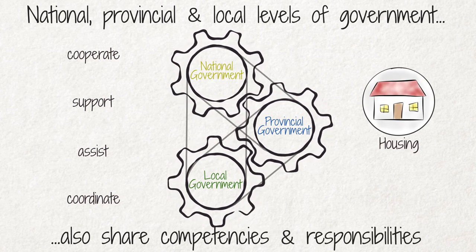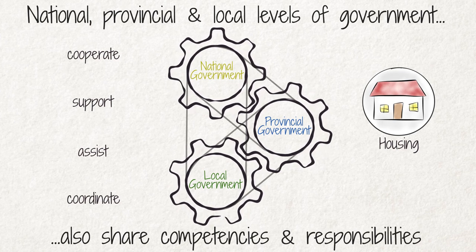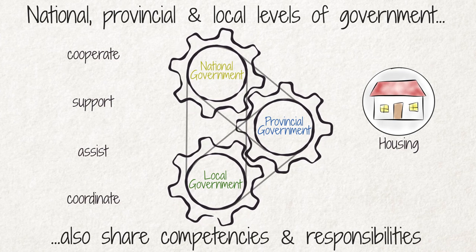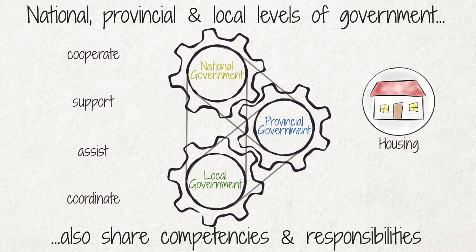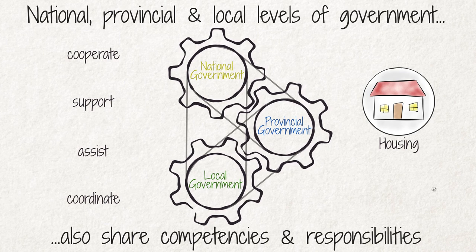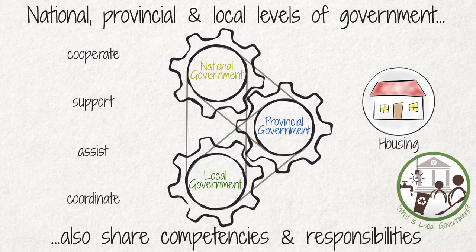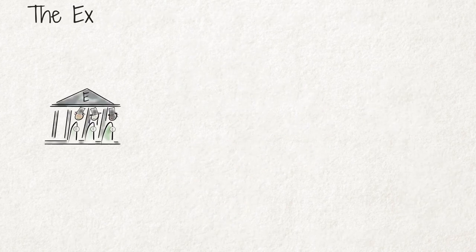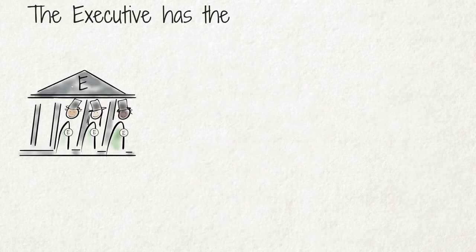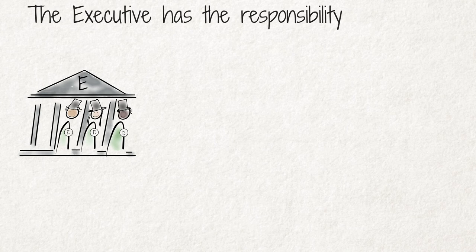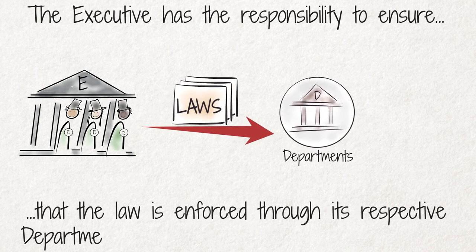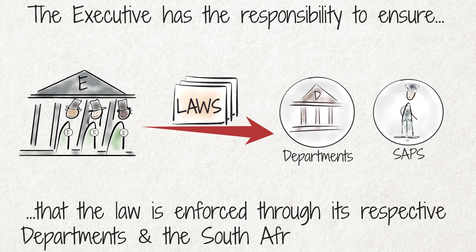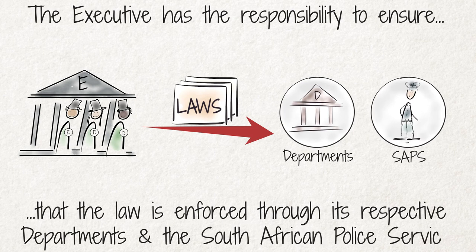We explain the exclusive and shared competencies of the national and provincial government in more detail in our video, 'What is local government?' The executive further has the responsibility to ensure that the law is enforced through its respective departments and the South African Police Service.